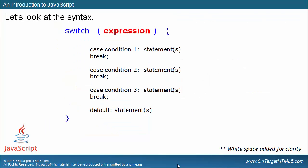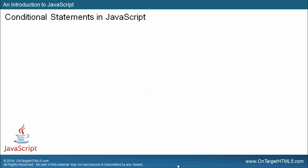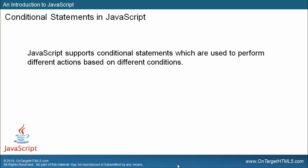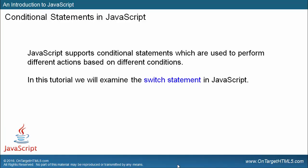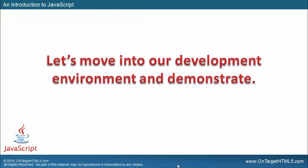So let's look at the syntax: we've got the switch keyword, then inside parentheses we put the expression we're testing against. Then I've got my case with condition 1, case with condition 2, case with condition 3, and all the statements fall inside those cases. I end each case with a break statement, and at the end I have a default statement. JavaScript supports conditional statements which are used to perform different actions based on different conditions, so let's move into our development environment and demonstrate what we talked about in our presentation.